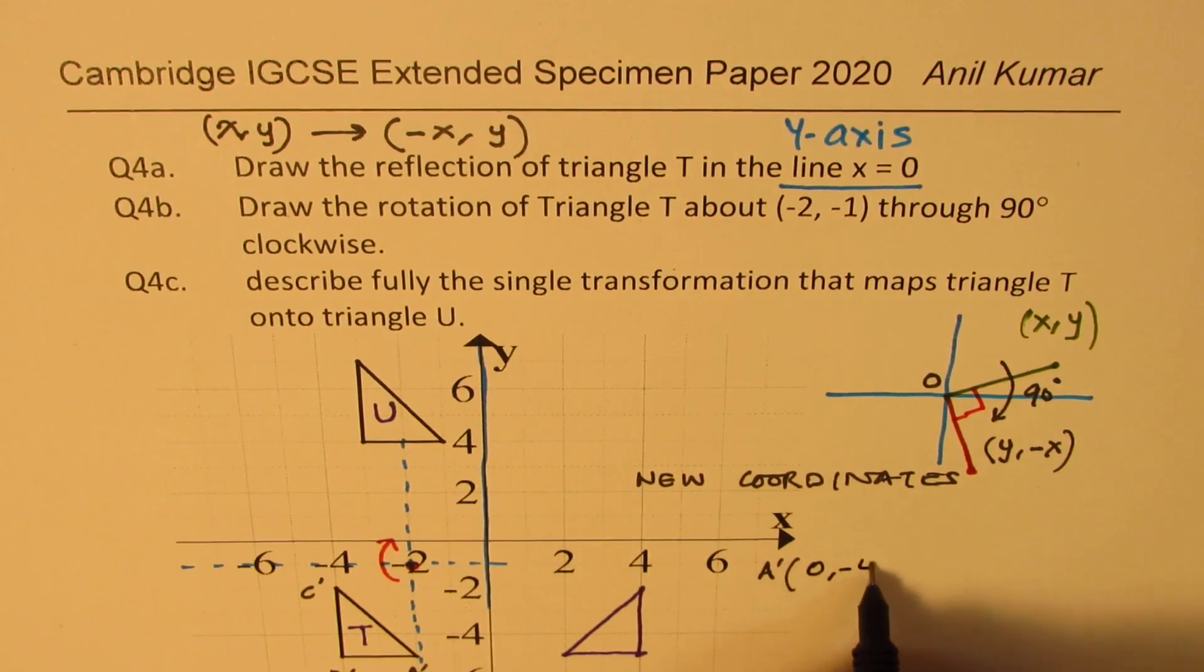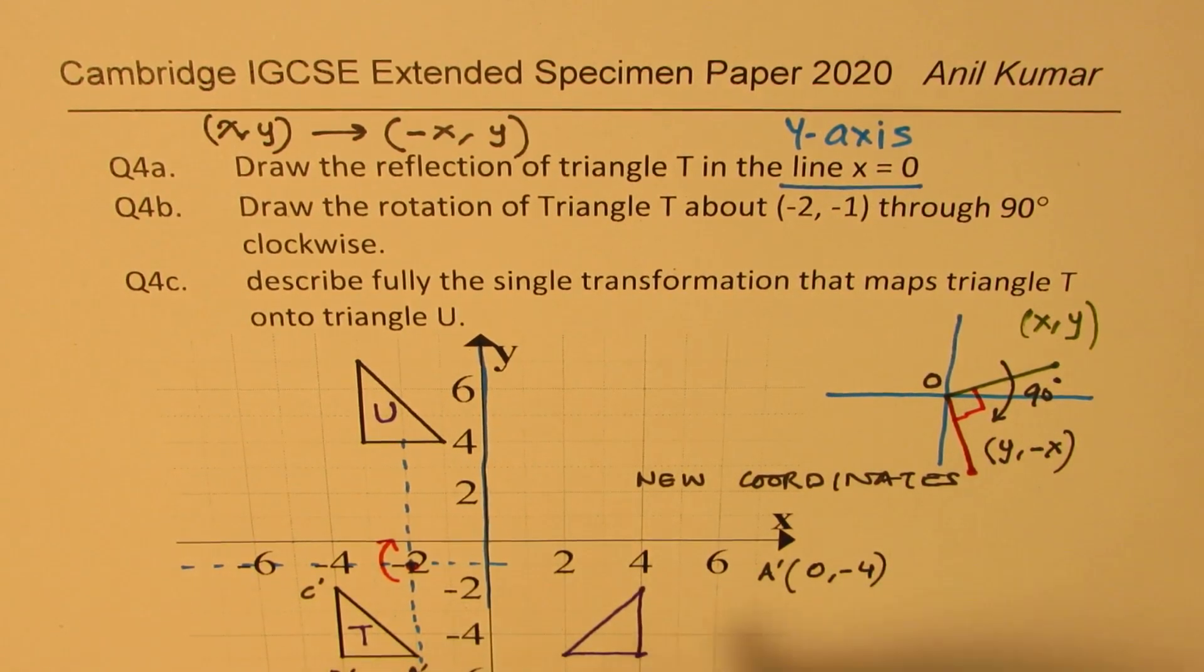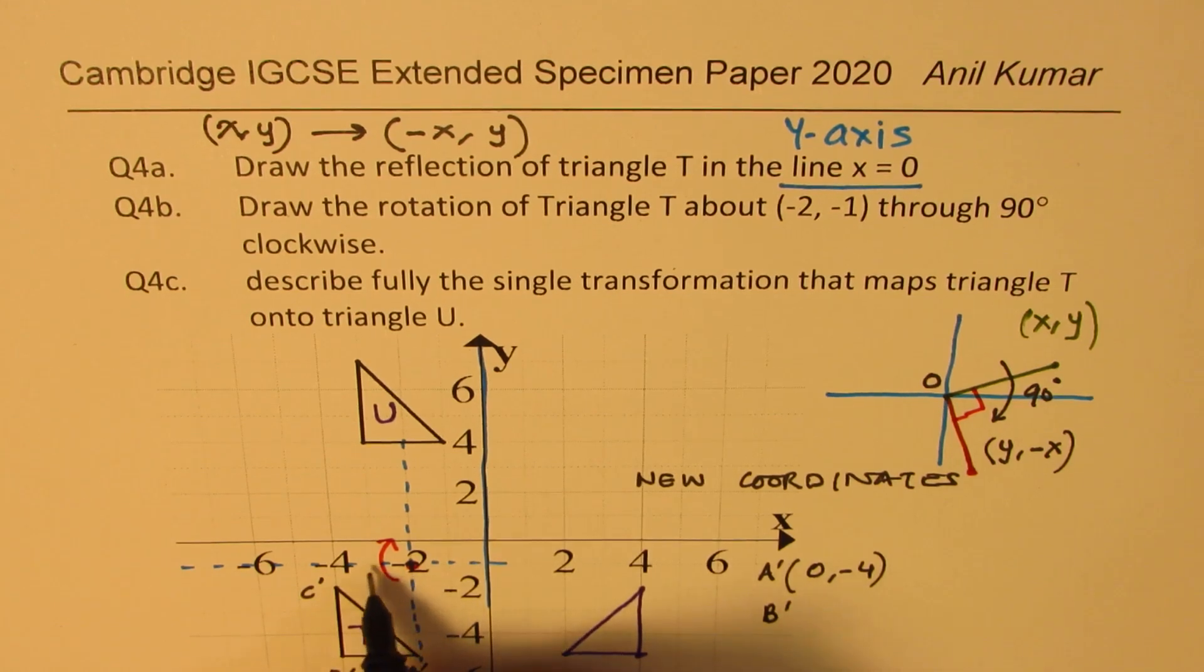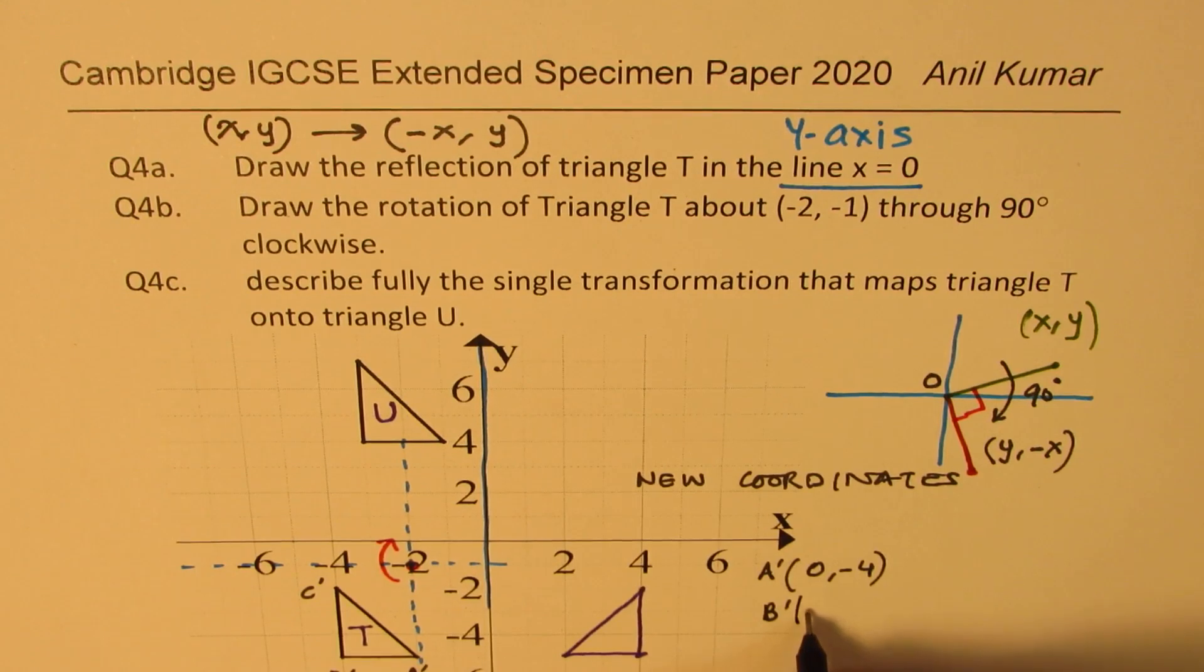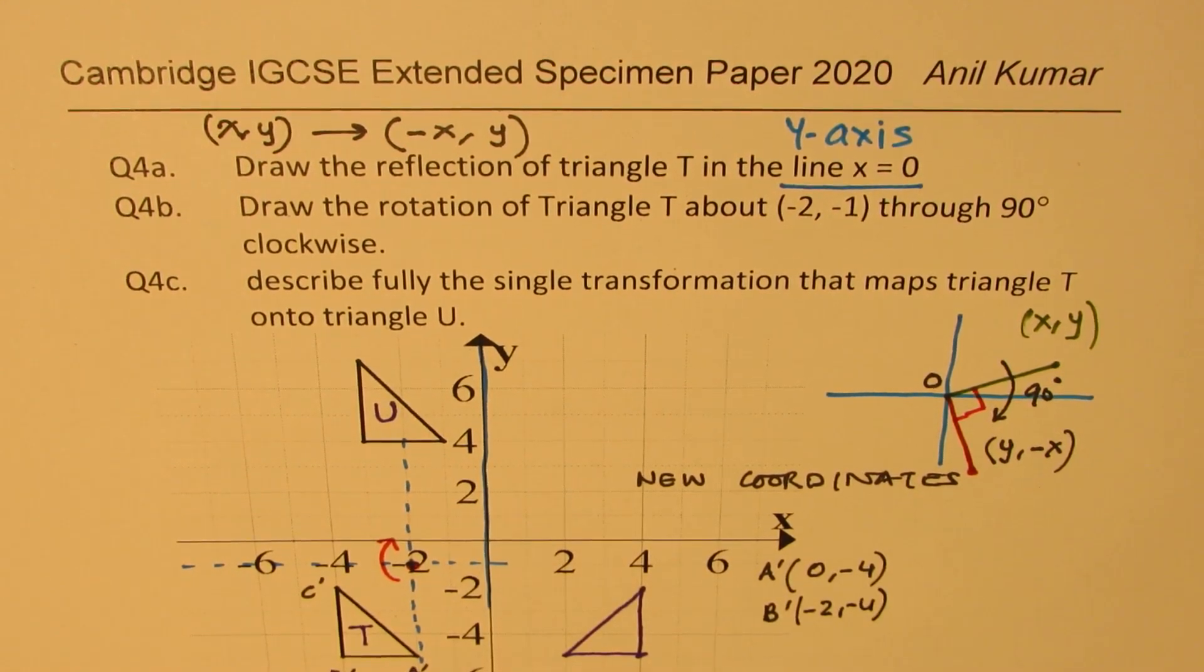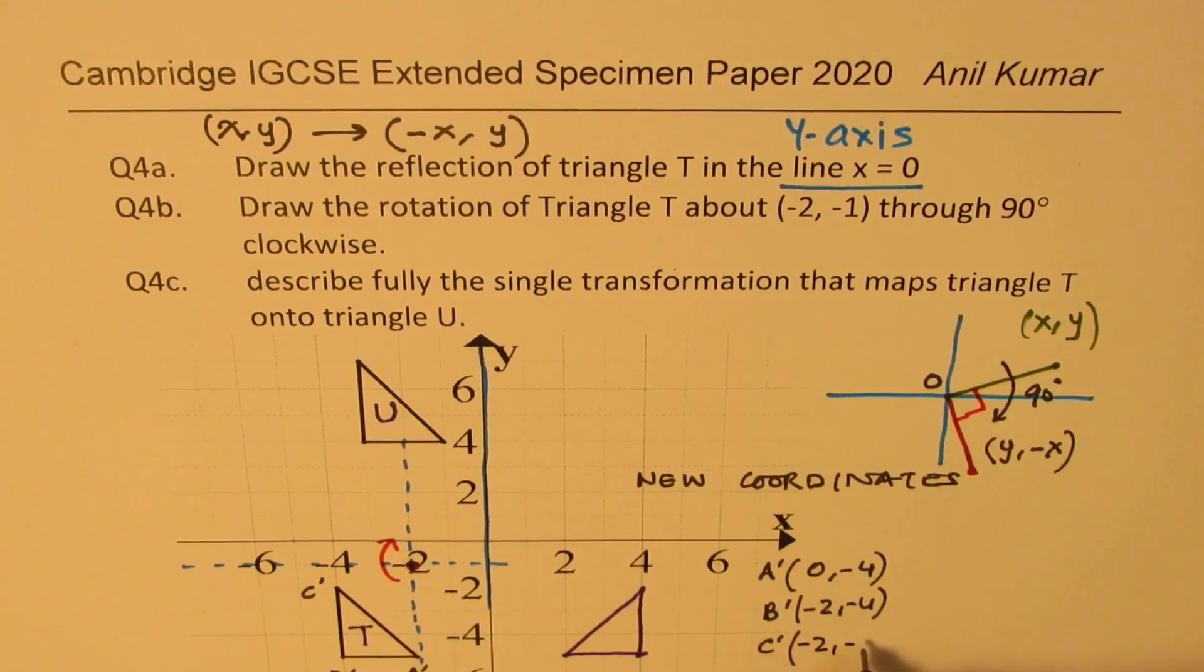The B value will be: you are moving from here 2 units to the left and then going 4 units, so minus 2 and then minus 4. And for C dash, you actually moved again 2 units to the left and then 1 unit down. So minus 2, minus 1.